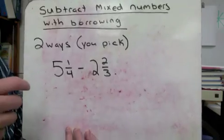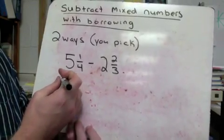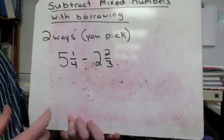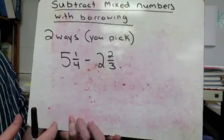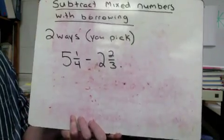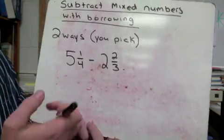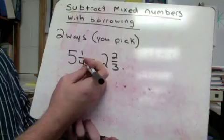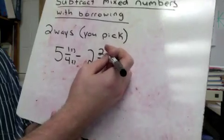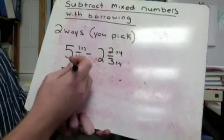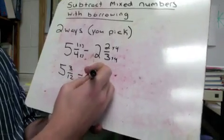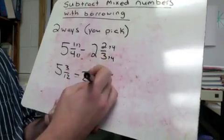The first thing we always have to start with is common denominators. So if we have five and a fourth minus two and two-thirds, three and four — 12 is probably the smallest number we could use. You could use 24, but it's always best to pick the smallest one because you have the least amount of reducing to do at the end. To get 12, that would be times three and times four. So we now have five and three-twelfths take away two and eight-twelfths.